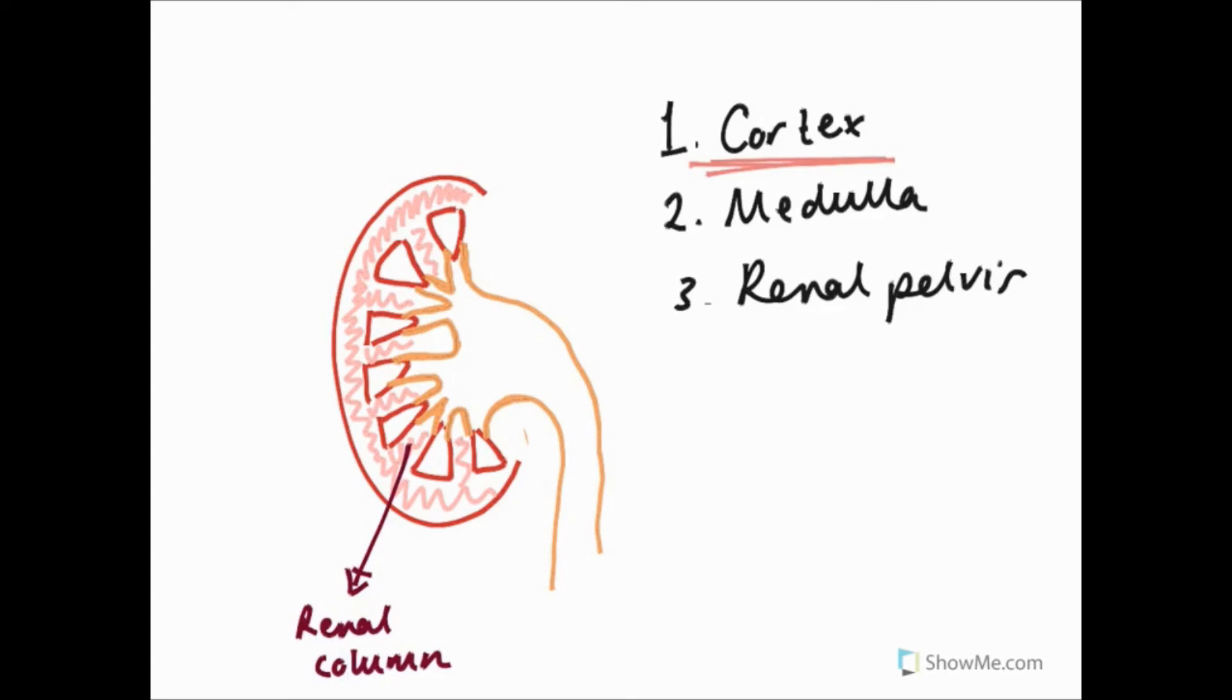The darker inner bit of the kidney is called the medulla. The medulla is formed by the renal pyramids. The bases of the pyramids face outwards and the apex of each pyramid faces inwards. The renal pyramids are separated by the renal columns.